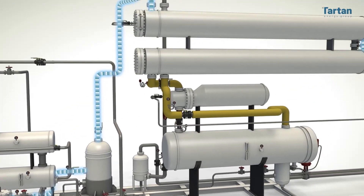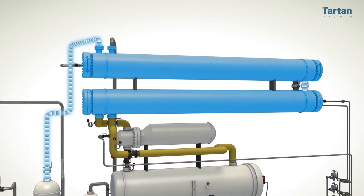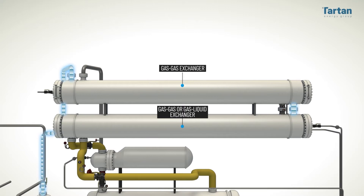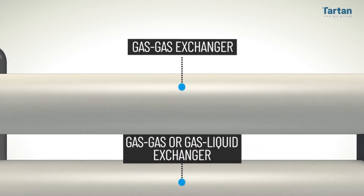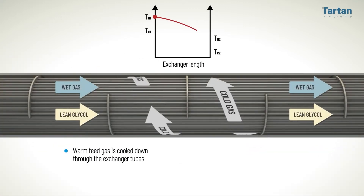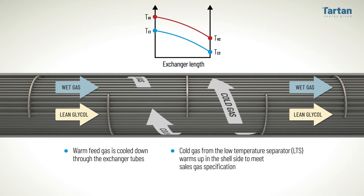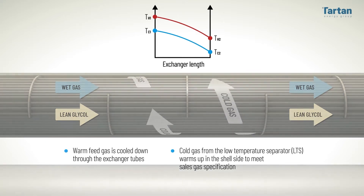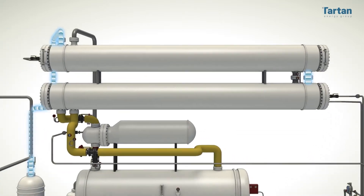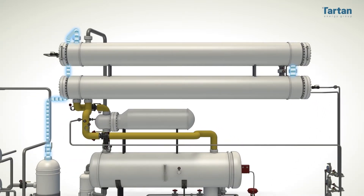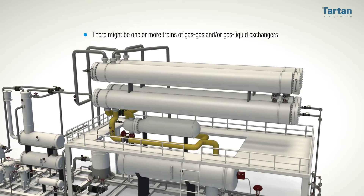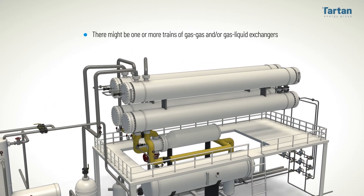From there, the gas is chilled through a series of gas-gas exchangers. In the gas-gas exchanger, warm feed gas is cooled down through the exchanger tubes while cold gas from the low temperature separator, or LTS, warms up in the shell side to meet sales gas specification. Depending on the size of the plant and the amount of gas being processed, there might be one or more trains of gas-gas and/or gas-liquid exchangers.